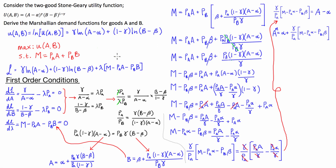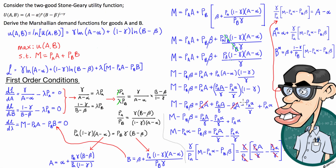The Marshallian demand for good A using the Stone-Geary utility function includes both the subsistence levels of demand for good A and good B. By symmetry — and if you're at this level of Marshallian demand you should recognise the pattern — we can find the Marshallian demand for good B in a corresponding form. So here we have both Marshallian demands for good A and good B.